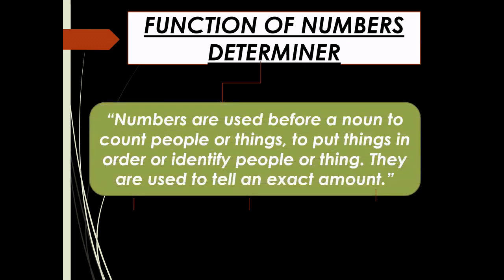Function of number determiners: numbers are used before a noun — meaning a name of a person, place, animals, or thing — to count people or things, to put things in order, or to identify people or things. They are used to tell an exact amount.